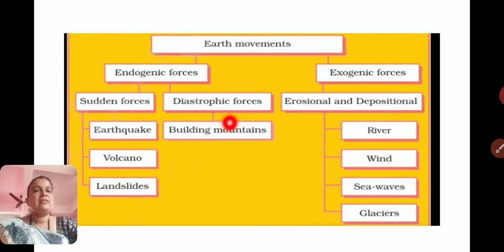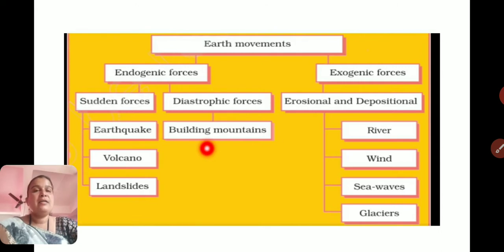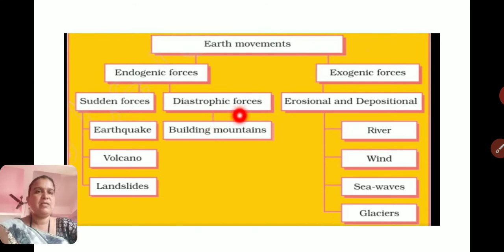Diastrophic forces are very slow movements, such as building mountains. For example, the height of the Himalaya mountains increases by a few inches every year. These types of slow changes take place due to diastrophic forces.